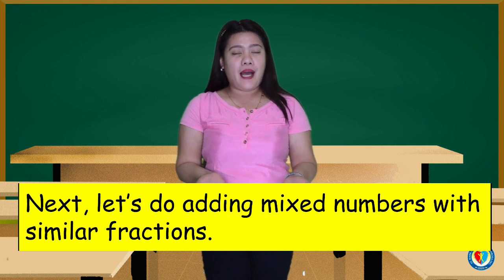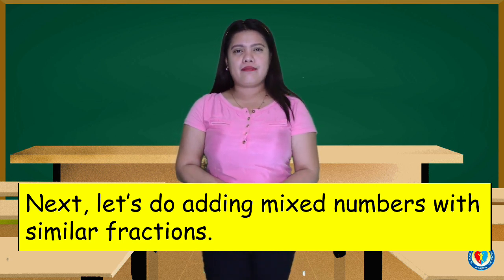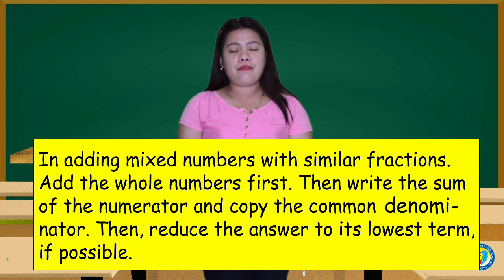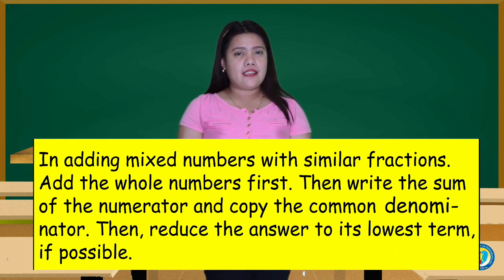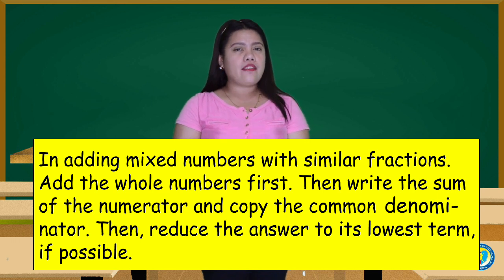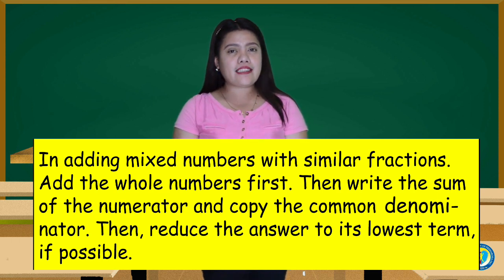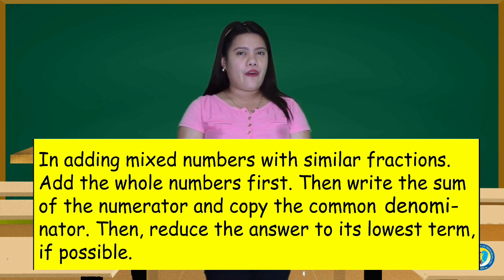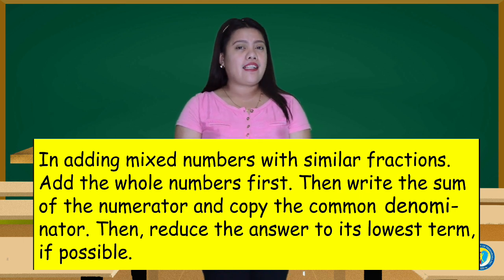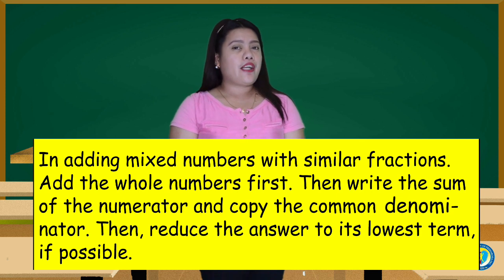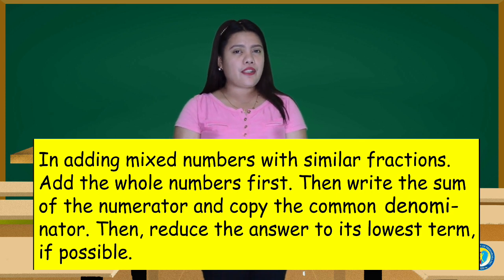Next, let's do adding mixed numbers with similar fractions. In adding mixed numbers with similar fractions, add the whole numbers first. Then, write the sum of the numerators and copy the common denominator. Then, reduce the answer to its lowest term if possible.